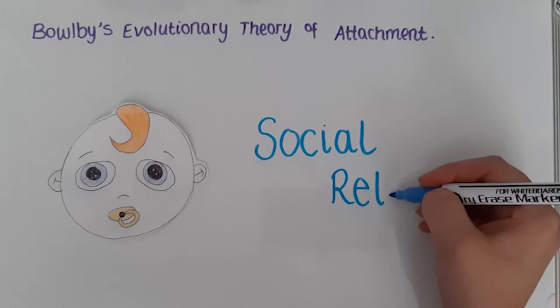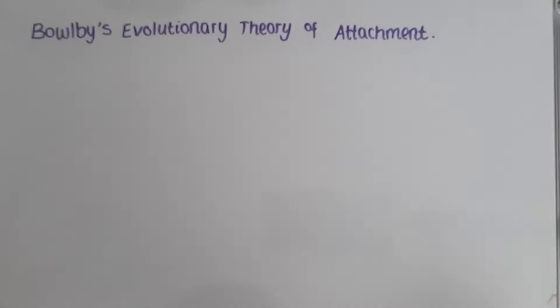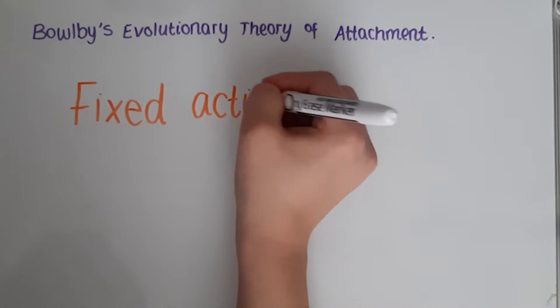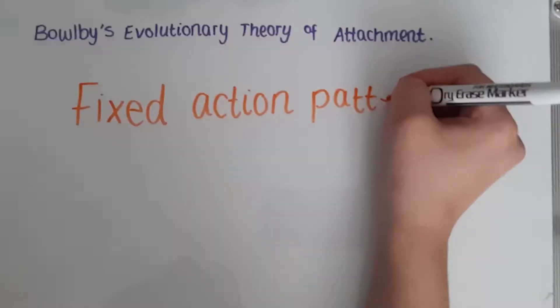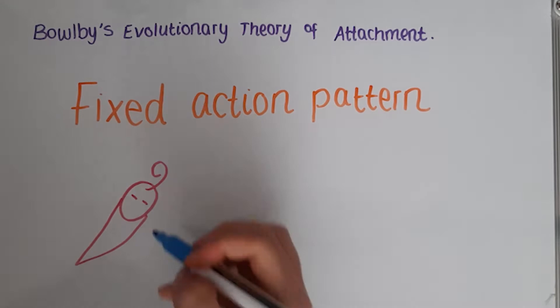Social releasers help ensure proximity and contact with the mother or attachment figure. For example, smiling, crying, crawling, etc. These are species-specific behaviours. These attachment behaviours form a fixed action pattern, where the infant produces social releases, such as crying, which stimulate caregiving from adults. The element of attachment is therefore not food, but care and responsiveness.